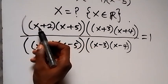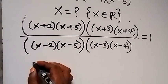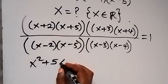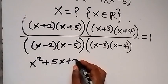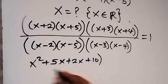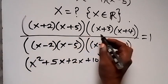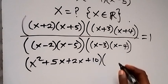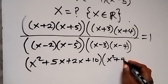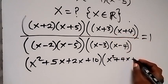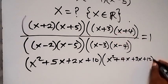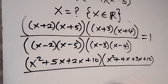We expand the numerator brackets. For (x+2)(x+5): x times x is x², plus x times 5 is 5x, plus 2x, plus 2 times 5 is 10. For (x+3)(x+4): x² plus 4x plus 3x plus 12.